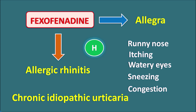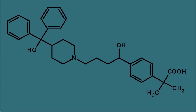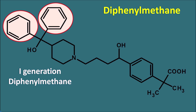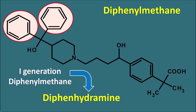Let us see how fexofenadine acts and how it can block the actions of histamine. First, let us see the structure of fexofenadine. We can observe one phenyl group here and another phenyl group here. These two phenyl groups are attached to the methane group, so fexofenadine belongs to the chemical category of diphenylmethanes. Among the anti-histamines we have several chemical categories, but fexofenadine belongs to the diphenylmethanes. We are also familiar with one of the first generation diphenylmethane drugs — diphenhydramine — which is present in many syrups and tablets and is well known by the brand name Benadryl.